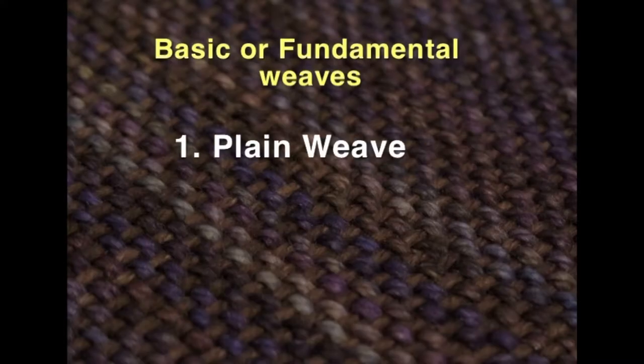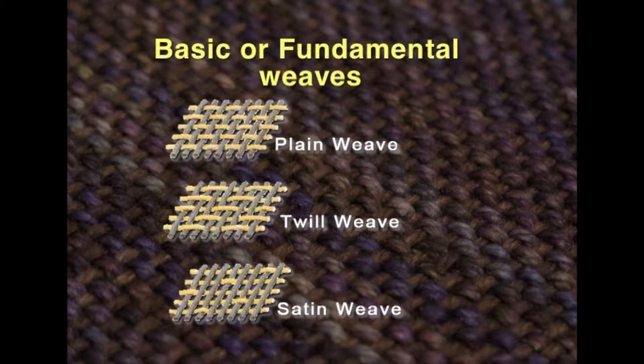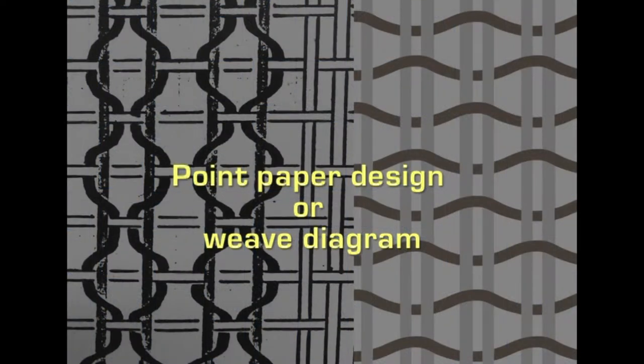These three basic weaves are: the plain weave, which is the simplest; the twill weave; and the satin weave. These three basic weaves can be made on a simple loom without any special attachments. The type of interlacement and how it should be structured is usually plotted on graph paper to help the weaver, and this graph paper is called a point paper design or weave diagram.